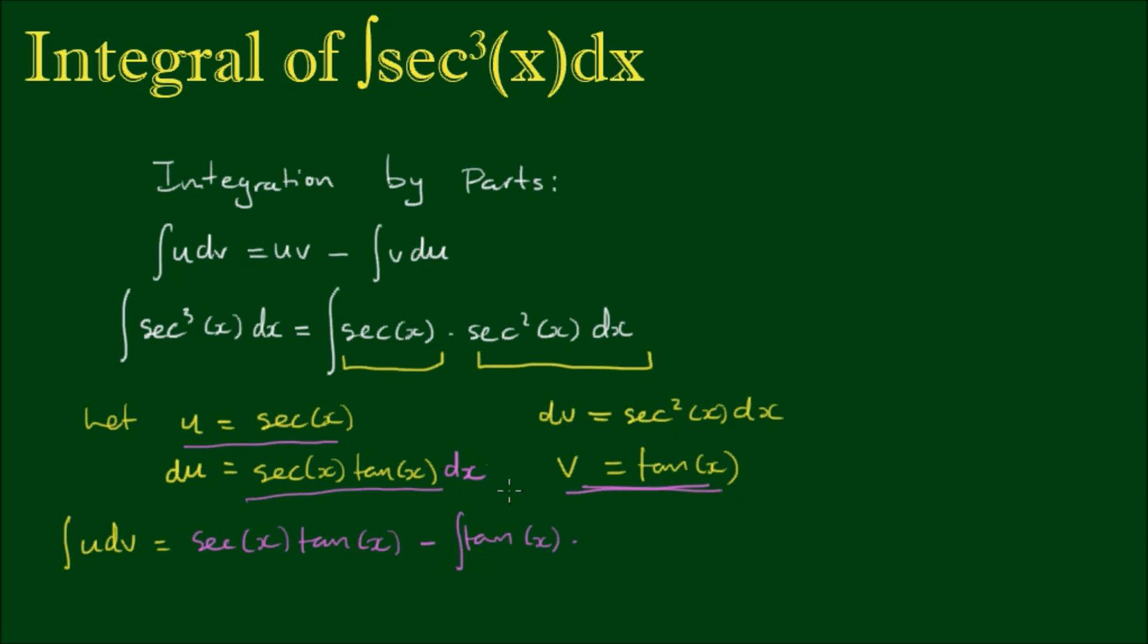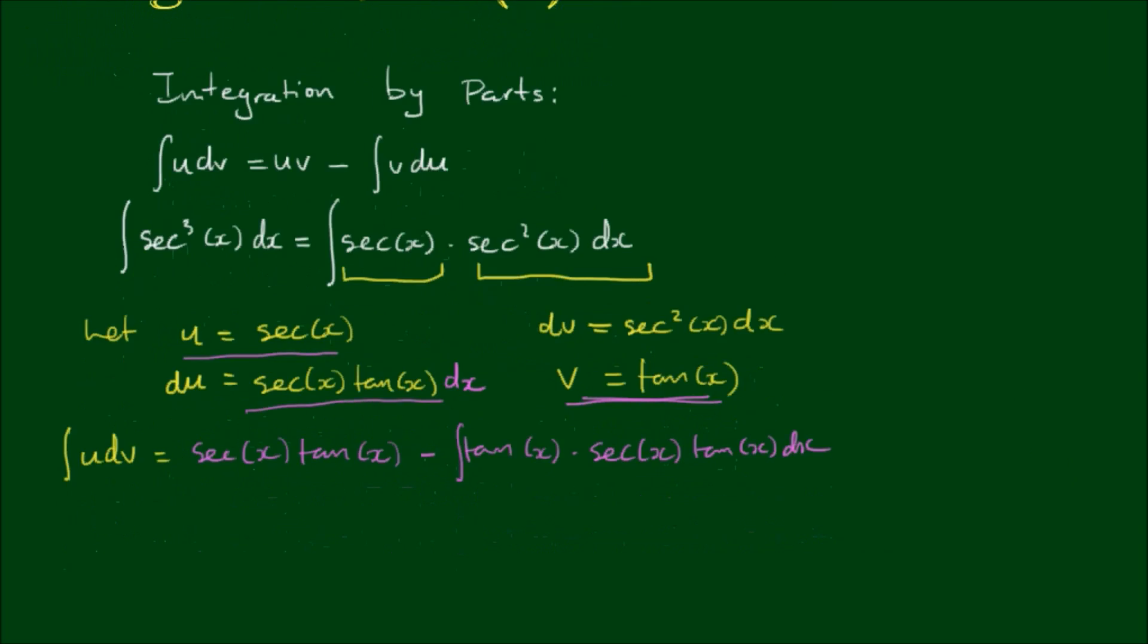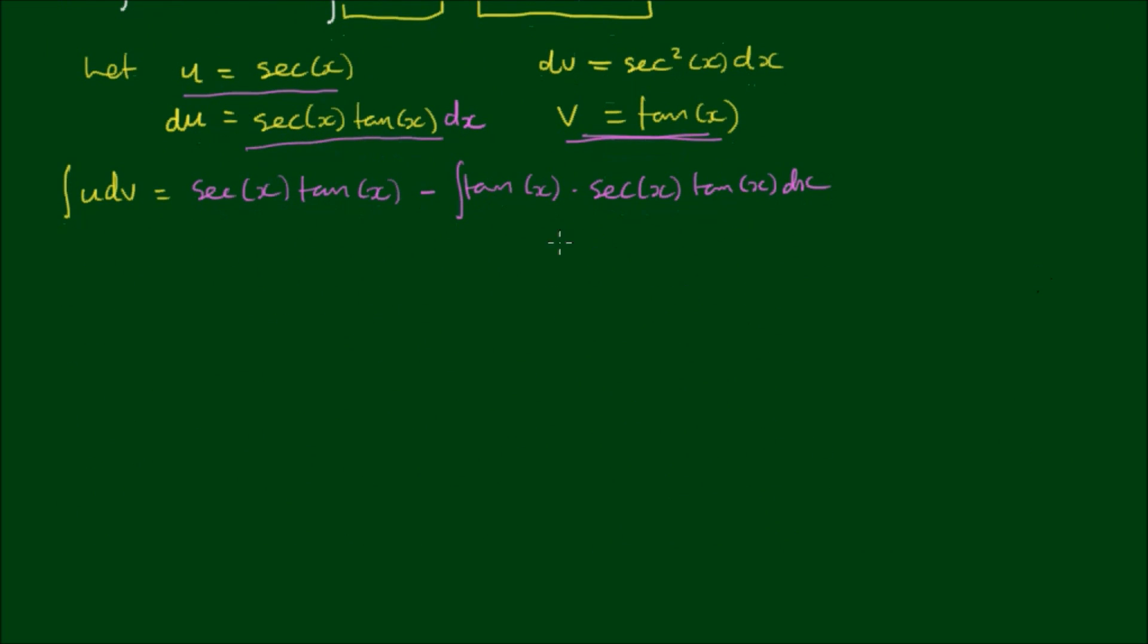Actually, this should have a dx here. So sec(x) tan(x) dx. Alright, so this part here we can rewrite as tan²(x) sec(x). Now tan²(x).